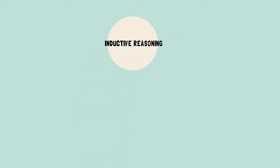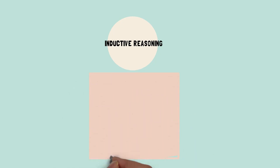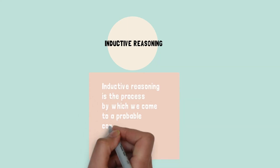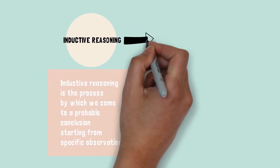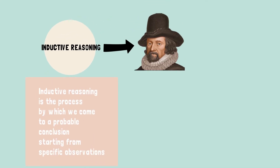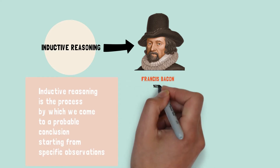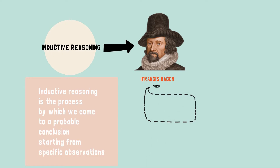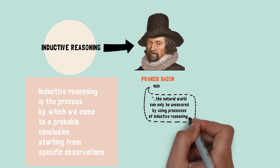Let's now discuss inductive reasoning. Inductive reasoning is the process by which we come to a probable conclusion, starting from specific observations. Historically, this method of reasoning came about much later than deductive logic, with early modern philosopher Francis Bacon, who in 1620 stated that the natural world can only be uncovered by using processes of inductive reasoning.